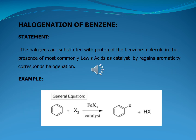Let's see the halogenation of benzene. Benzene reacts with halogens in the presence of a catalyst, replacing one of the hydrogen atoms on the ring by a chlorine or bromine atom. The reactions happen at room temperature. The catalyst is aluminum chloride or aluminum bromide when reacting with bromine, or iron. Strictly speaking, iron is not a catalyst because it gets permanently changed — it reacts with some chlorine or bromine to form iron(III) chloride (FeCl3) or iron(III) bromide (FeBr3), which then act as the true catalysts, behaving exactly like aluminum trichloride or aluminum tribromide. The halogens are substituted for a proton of benzene in the presence of Lewis acid catalysts; regaining aromaticity corresponds to halogenation.